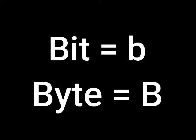When abbreviated, both bits and bytes are represented by a B, but bits should be a lowercase b and bytes should be a capital B.